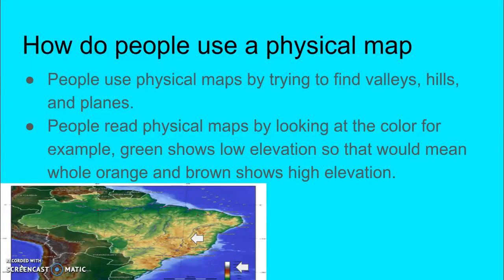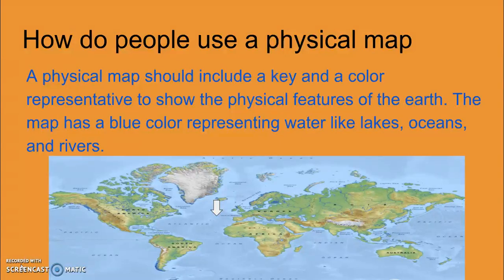How do people use a physical map? People use physical maps by trying to find valleys, hills, and plains. People read physical maps by looking at the color. For example, green shows low elevation, so that would mean orange and brown shows high elevation. A physical map should include a key and a color representation to show the physical features of the Earth.